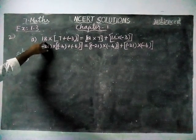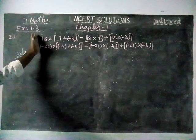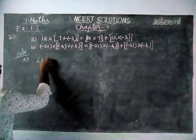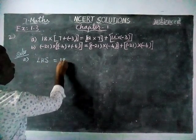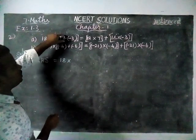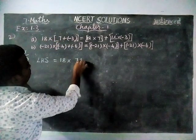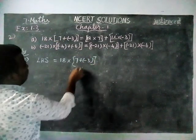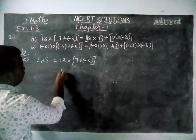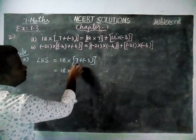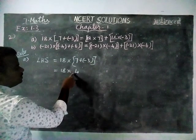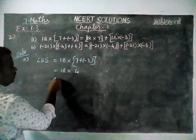Here they have given an equation and they ask us to check whether the left hand side is equal to the right hand side. So first we are going to take the left hand side. Left hand side is equal to 18 into, within bracket there is 7 plus minus 3. Since the signs are different, we have to find the difference. 18 into the difference between these two is 4, and the greatest number is 7, in front of which the plus sign is there.